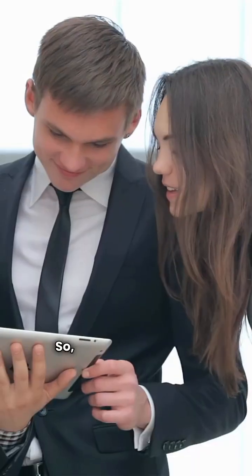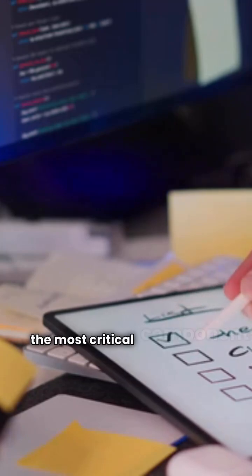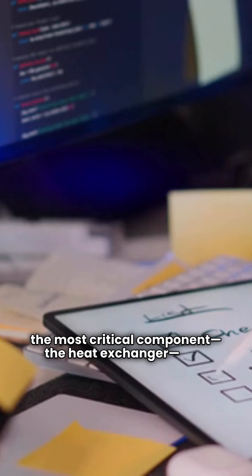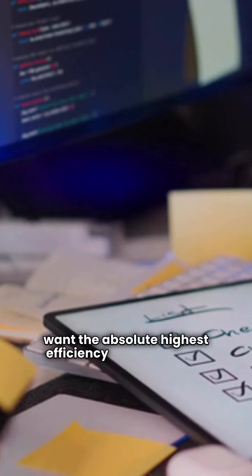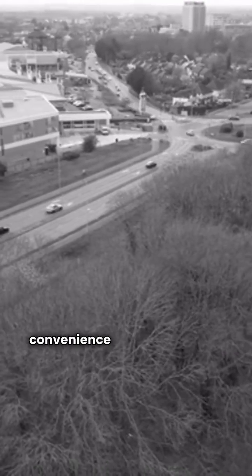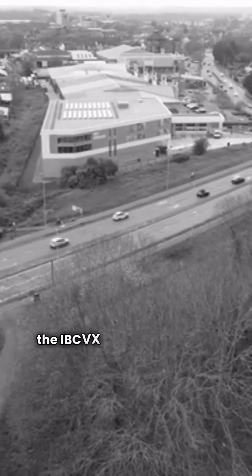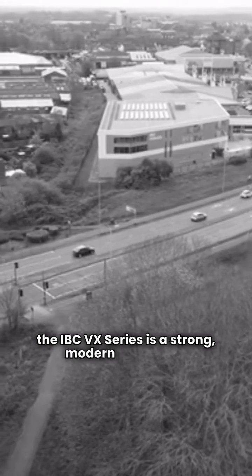So, what's the verdict? If you prioritize the longest possible warranty on the most critical component, the heat exchanger, and want the absolute highest efficiency in the Vitodens 200W, Viesemann is your premium choice. If you value a longer electrical parts warranty and the convenience of built-in multi-zone control and Wi-Fi, the IBC VX series is a strong modern contender.